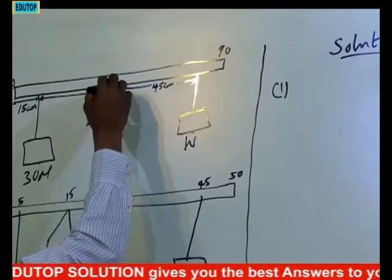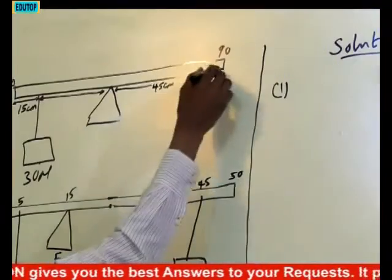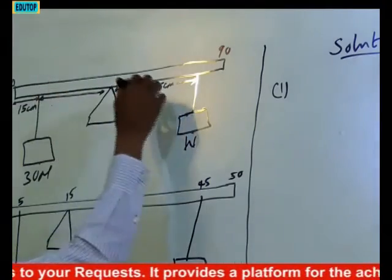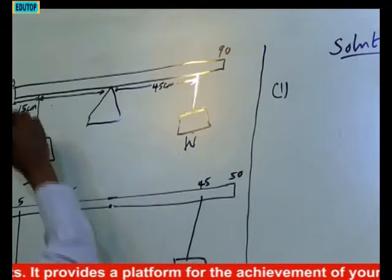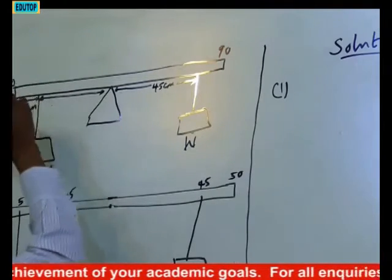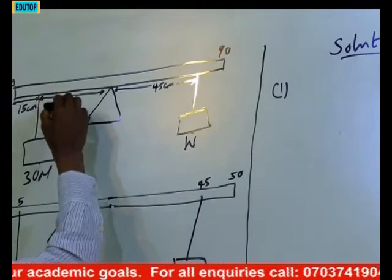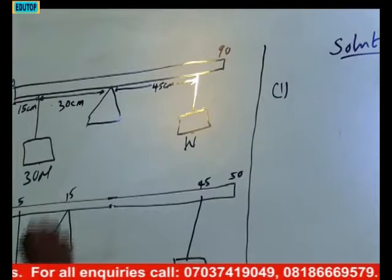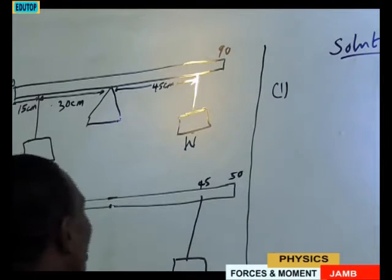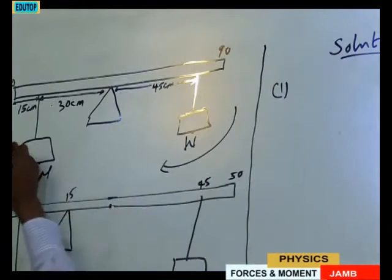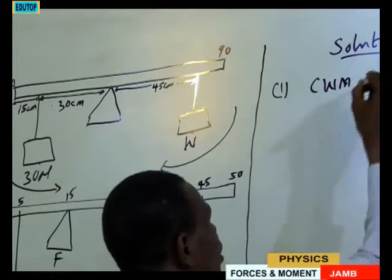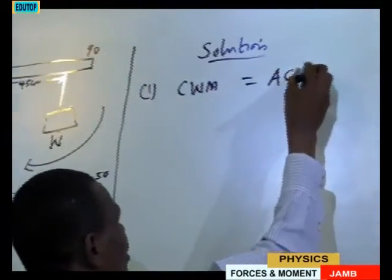From this center to this side is 45 cm. Automatically, from this center to the other side should also be 45, because 45 plus 45 gives us 90 altogether. We are told that from one end to the load is 15. So we remove 15 from 45, and we get 30 cm. Now applying the principle of moments: this side is clockwise, and this side is anticlockwise. The principle of moments says clockwise moments should be equal to anticlockwise moments.